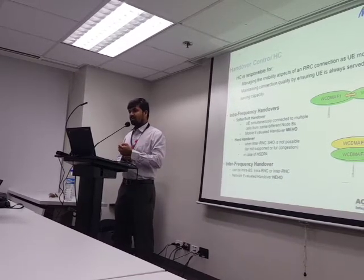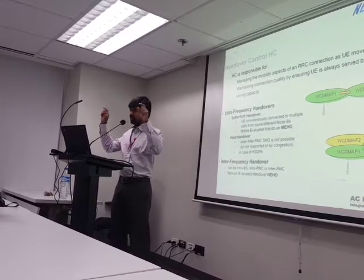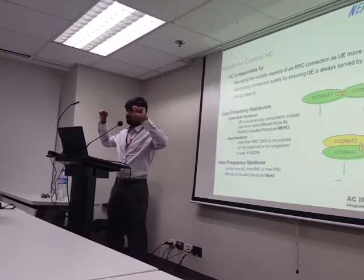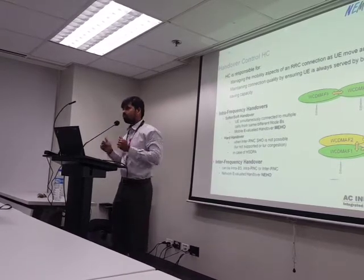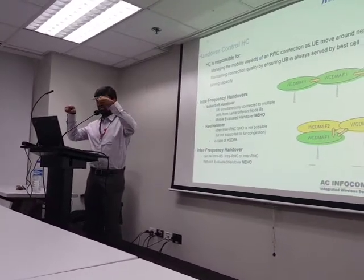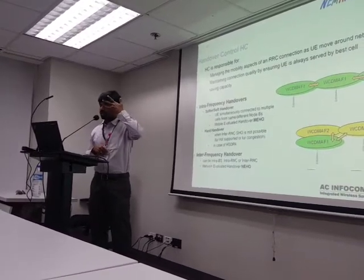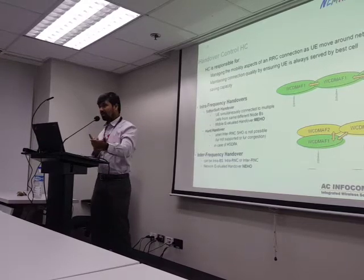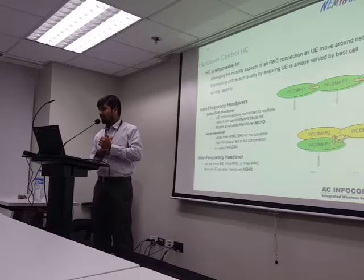Hard handover occurs when inter-RNC soft handover is not possible. The inter-RNC connection uses the IUR link. If that link is not there — it comes with an additional feature — and if you have not bought that for your network, you cannot have a soft handover when considering two different RNC Node Bs. In that case, it is a hard handover: you have to break the connection with the serving RNC and start a fresh connection with the new RNC Node B.